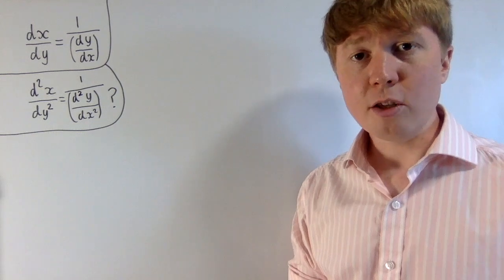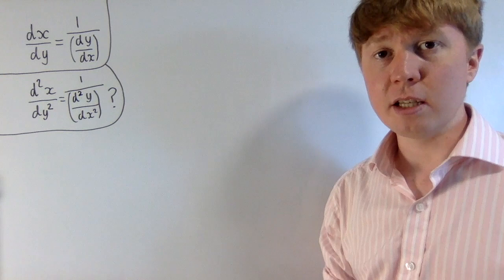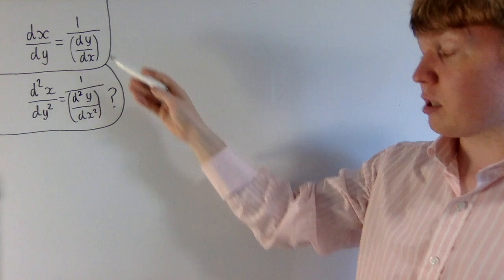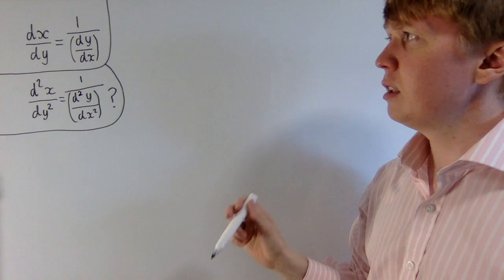You may have been taught that dx/dy equals 1 over dy/dx, at least informally speaking. What this tells you is if you've got y as some function of x, y = f(x), then to find the derivative of the inverse function, dx/dy is basically the reciprocal of the derivative of your original function, dy/dx, at some corresponding point.